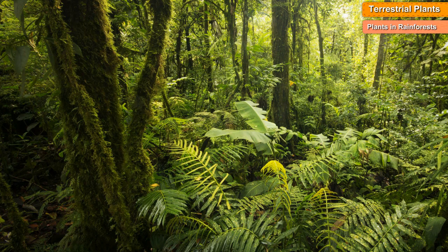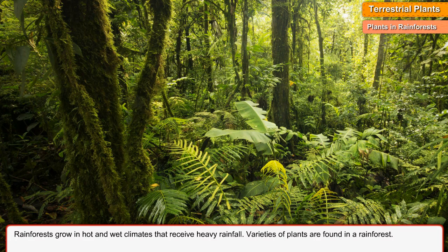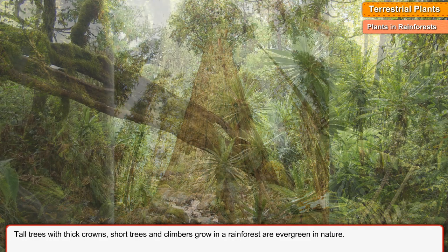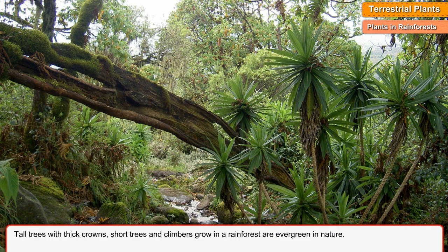Plants in Rainforests. Rainforests grow in hot and wet climates that receive heavy rainfall. Varieties of plants are found in a rainforest. Tall trees with thick crowns, short trees, and climbers grow in a rainforest and are evergreen in nature.